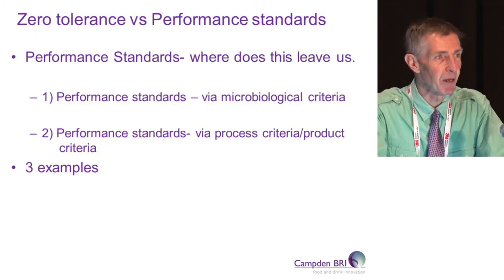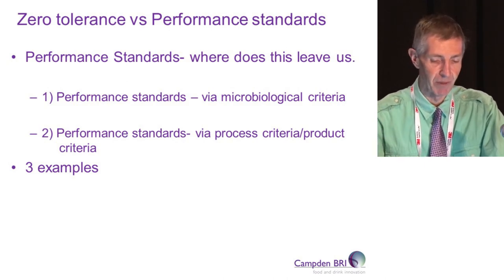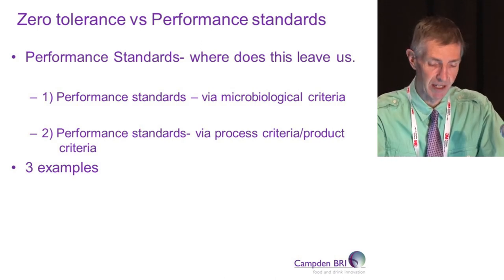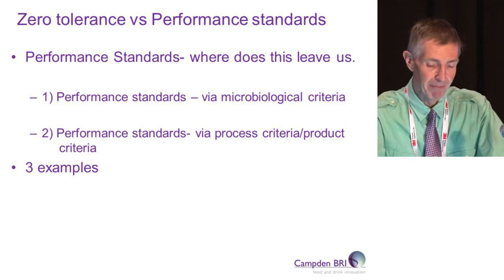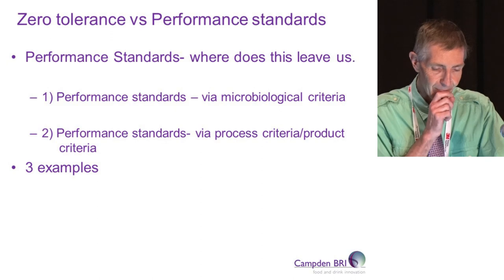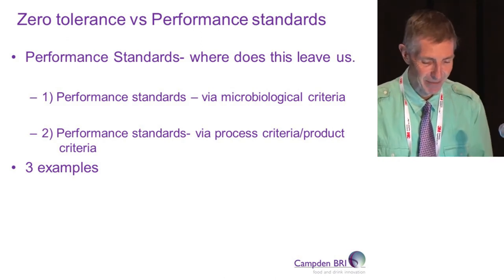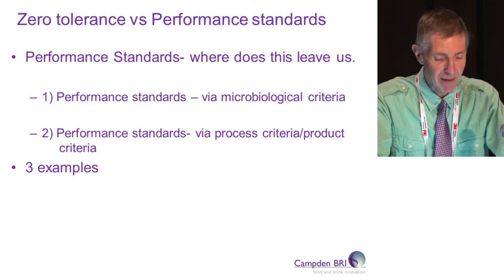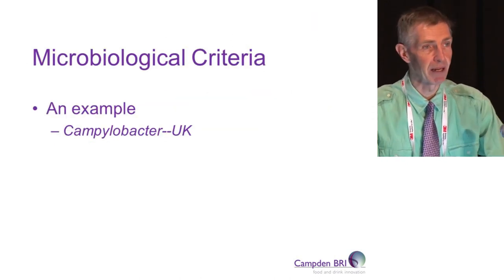So what does that leave us when it comes to performance standards? I'm going to talk about two types: one via microbiological criteria, and secondly, performance standards via process criteria or product criteria, which is probably a better way to go in most cases. Rather than discussing Listeria absence criteria from a European versus US perspective, I'm going to talk about how criteria have been used in the UK to tackle campylobacter in poultry.